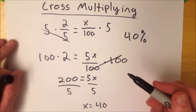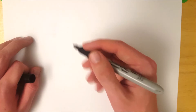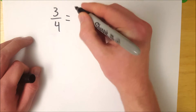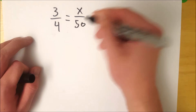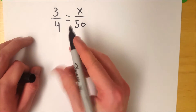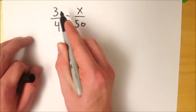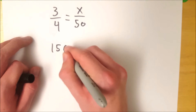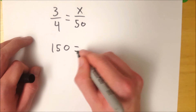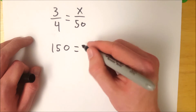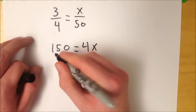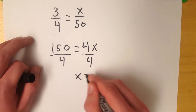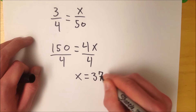Let's look at one more quick example and use cross-multiplying to do it. We've got 3 over 4, and let's set it equal to x over 50. Using cross-multiplication to solve for x, we multiply this numerator by this denominator — that's 3 times 50, which equals 150 — and set this equal to this numerator times this denominator, which is 4x. Then we divide both sides by 4, which gives us x equals 37.5.